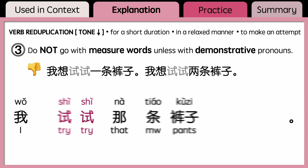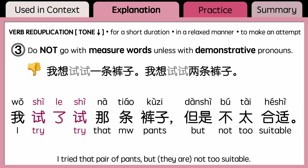If you already tried them, you can say 试了试, as in: 我试了试那条裤子,但是不太合适 — 'I tried that pair of pants but they're not too suitable.'